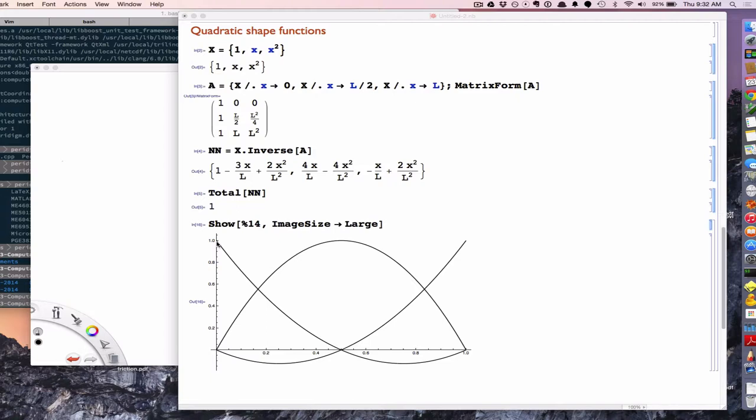And you can see that the Kronecker delta property means that for the first shape function, when it's evaluated at node 0, it's 1, and it's 0 at the other 2.